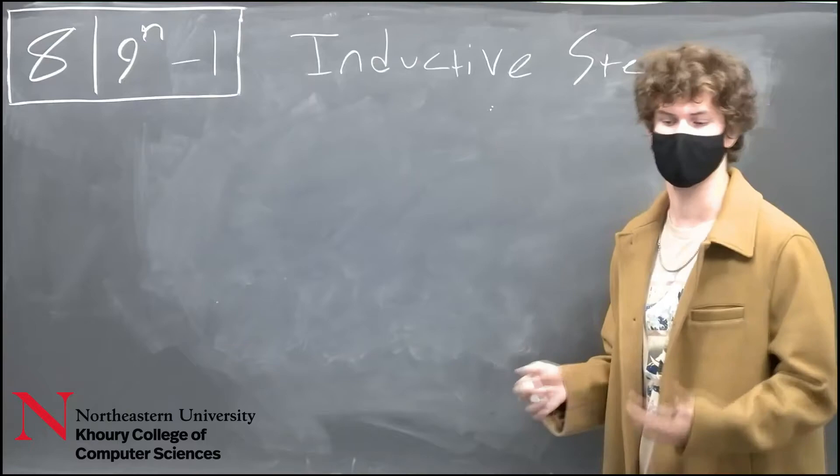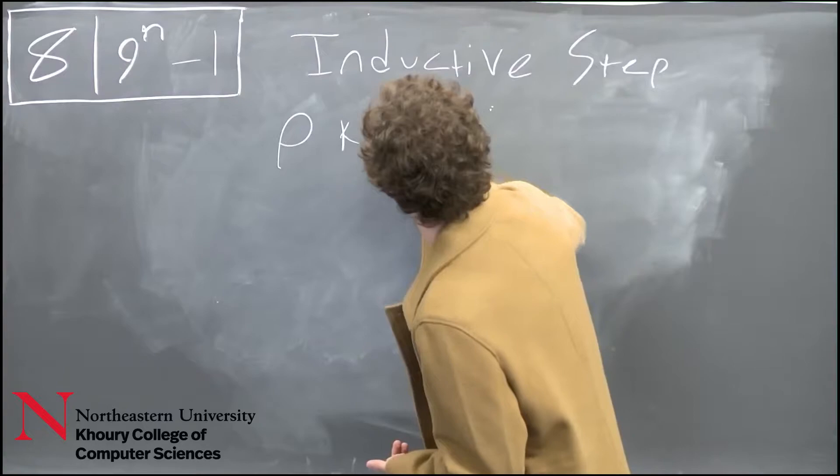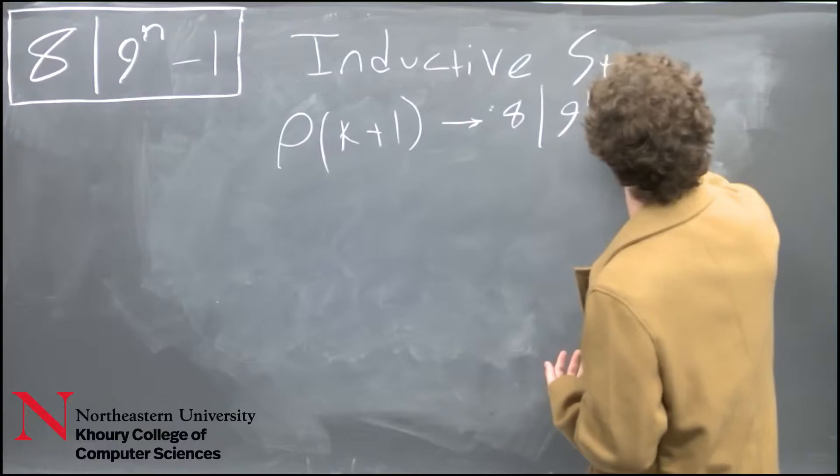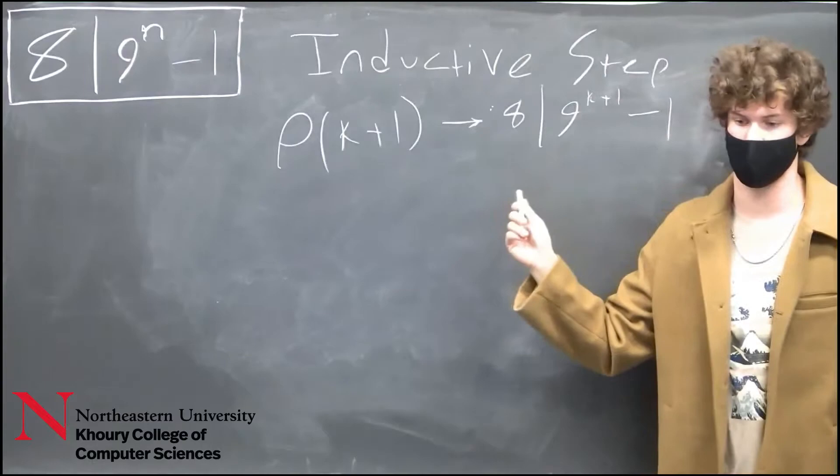we expect p of k plus 1 to claim that 8 divides 9 to the k plus 1 minus 1. For our inductive step this is what we are trying to prove. This is also where the arithmetic comes in.